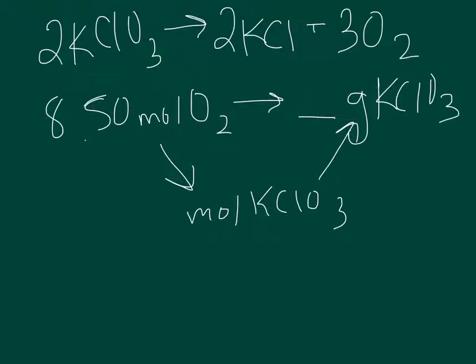To convert from moles of oxygen to moles of potassium chlorate, I need to use their mole-to-mole ratio. From the balanced chemical equation, I find that there are three moles of oxygen for every two moles of potassium chlorate, pulling the coefficients from the equation.